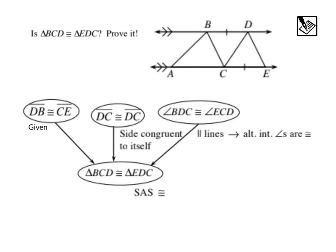In this example, we'll do a complete flowchart proof. Here, they're asking if triangle BCD is congruent to triangle EDC. And if it is, we want to prove it. Well, we know that CE and BD are congruent to each other. We have that as given. We also know that this shared side has to be congruent to itself. But we do want to include that because we're going to need that side for our proof. So we say DC is congruent to DC, and it's because the side is congruent to itself.